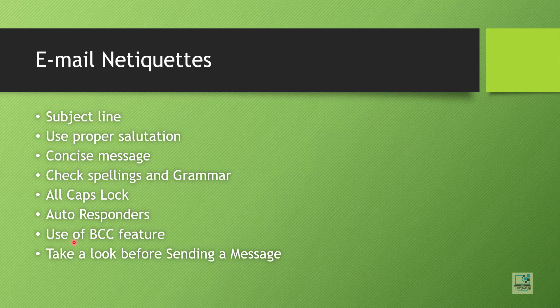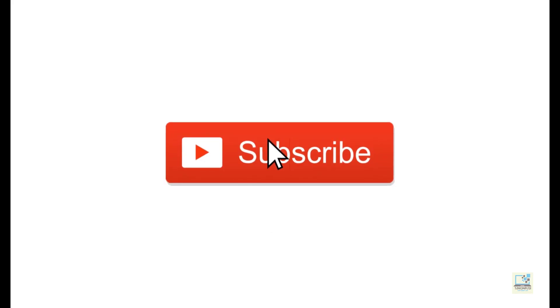Use of BCC feature: when sending a mail you can copy another person using CC (Carbon Copy) or BCC (Blind Carbon Copy). The difference is: any email address in CC is visible to all other recipients, but an email address in BCC — Blind Carbon Copy — is hidden; others will not know about that person, and that person will not know about others. Finally, take a look before sending — read the message again before sending to make sure everything you have written is correct. Thank you for watching this video; please like and subscribe to my channel and click the bell icon for new video updates.